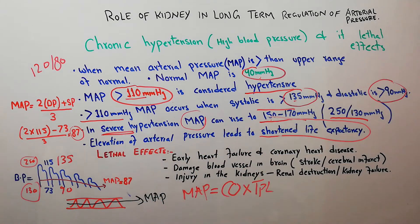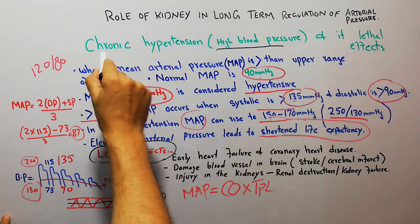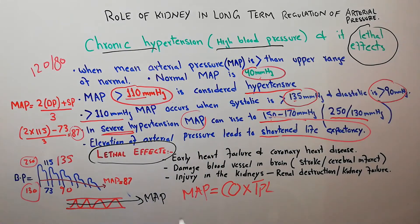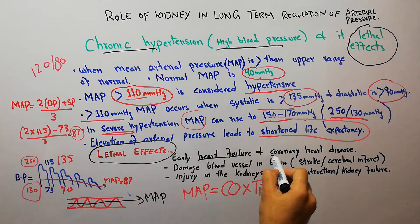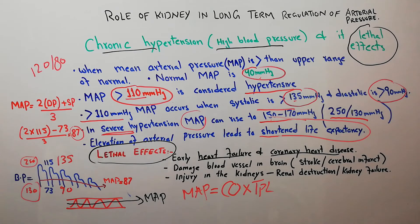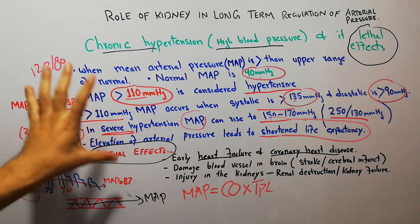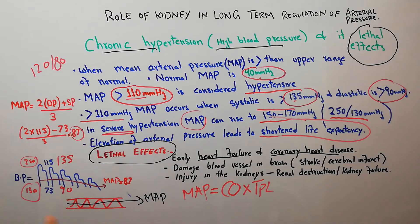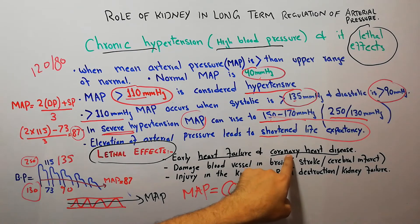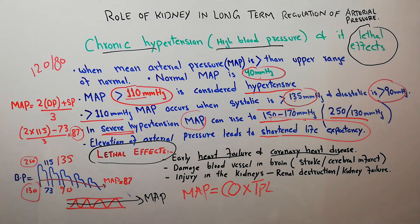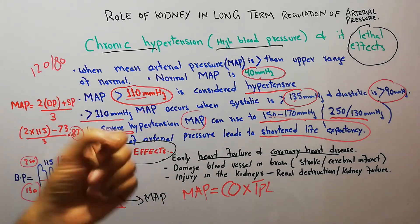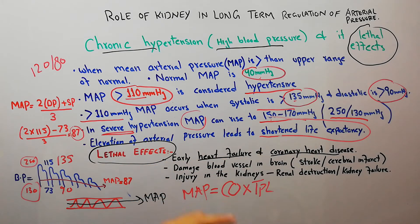The lethal effects of elevated mean arterial pressure — known as high blood pressure or chronic hypertension — include early heart failure and coronary heart disease. With high MAP, the heart has to pump with increasingly high pressure, which damages the heart muscle and the coronary arteries, ultimately leading to death from heart failure.